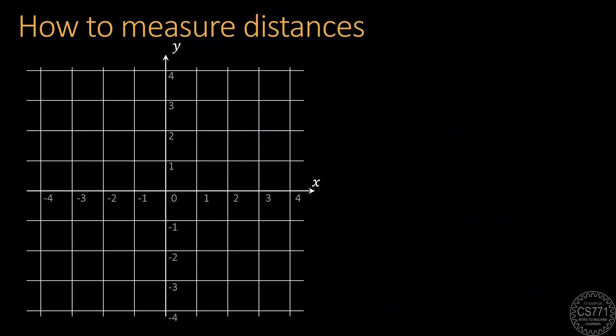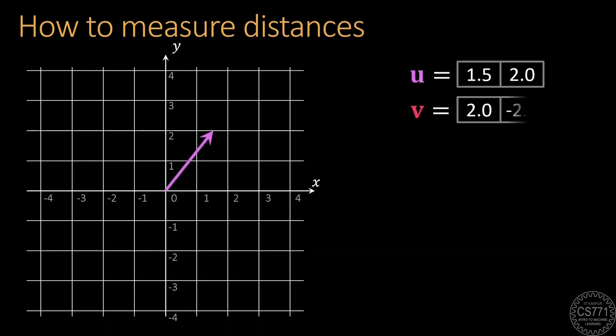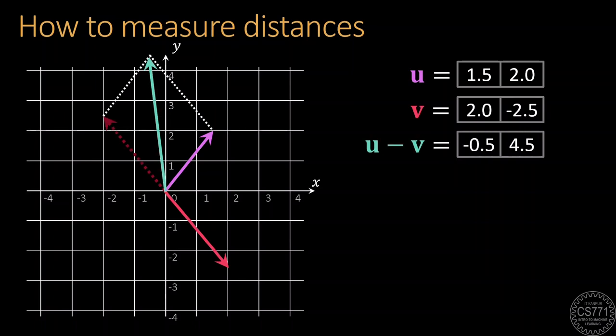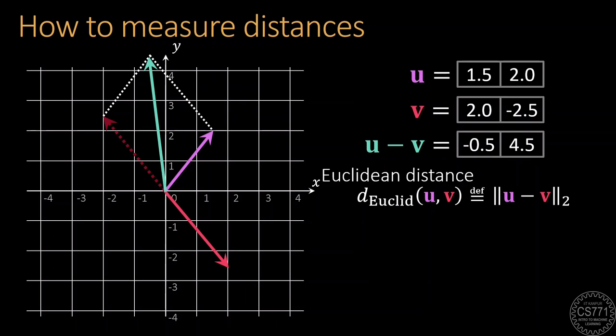Being able to measure the length of a vector immediately gives us the ability to measure distances. To measure the distance between the points denoted by the vectors, say, U and V, we simply find the difference vector and calculate its length. Note that this length could be measured using any of the norms we just saw, either Euclidean or Manhattan or something else. The fact that the difference vector can be seen as starting at one of the vectors and ending at the other means that by calculating the length of the difference vector, we are indeed calculating the distance between the two points.